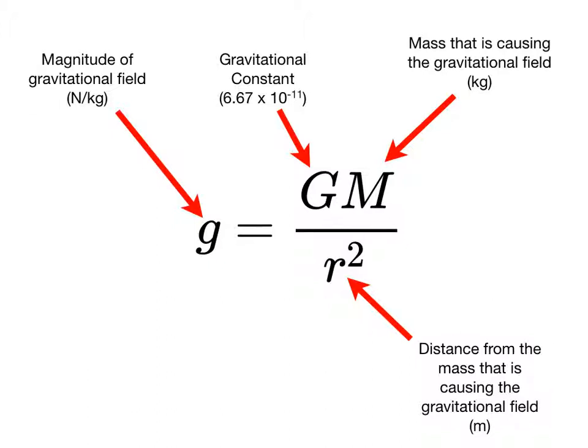It's important to know that the lowercase g, the gravitational field strength, nothing has to be at that location. g is describing the properties of a location in space, whether or not there's an object there or not.